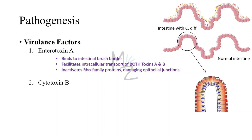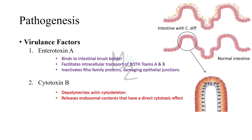Cytotoxin B depolymerizes the actin cytoskeleton and releases endosomal contents that have a direct cytotoxic effect. The depolymerization of actin results in loss of cytoskeletal integrity, causing apoptosis and death of enterocytes. Exotoxin B plays the leading role in producing the signs and symptoms of human disease.